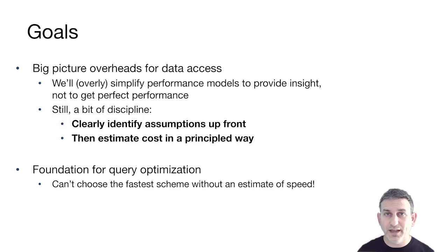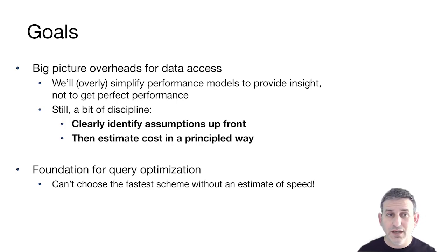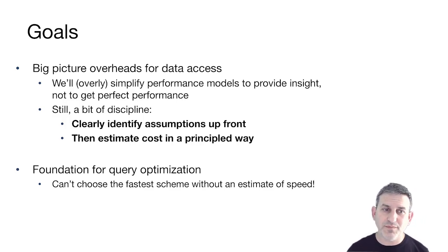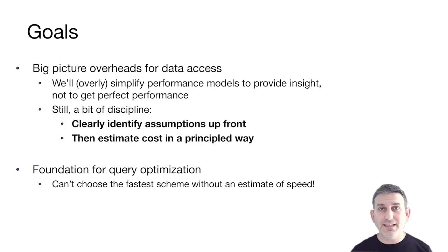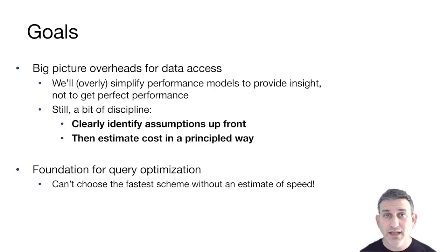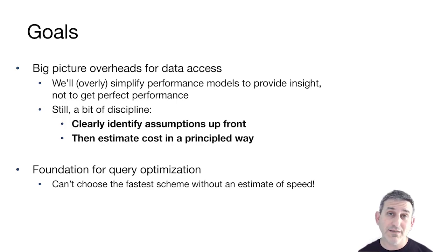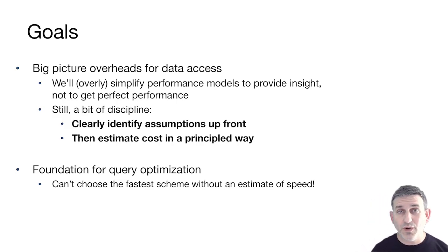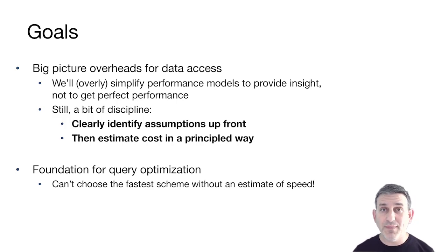Our goals today: a big-picture overhead for data access costs. This is not going to be super granular, but we'll get enough detail to understand what we need. We will simplify — maybe oversimplify — our performance models, but the goal is insight, not perfect performance. We want to clearly identify our assumptions up front so that we can refine them later. Given those assumptions, we estimate cost in a principled way. This kind of thinking is the foundation for query optimization: we can't choose the best way to run a query until we know estimates of how long different strategies take.